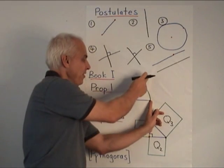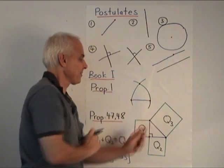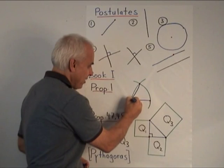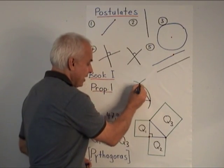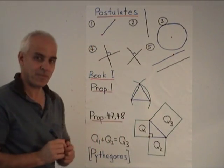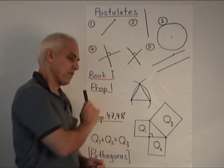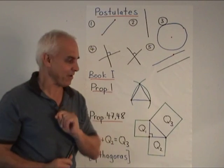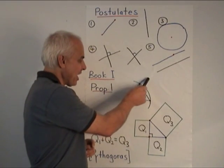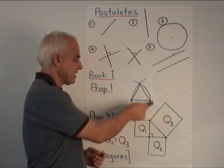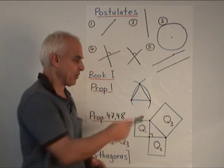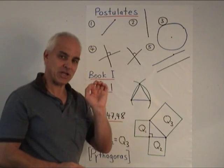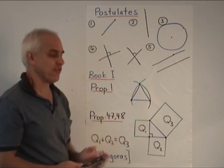And then another circle centered here through the other point. Then these two circles meeting here give us an equilateral triangle. And already with this first proposition, we have an example of a place where Euclid cheats a little bit, because he does not have a postulate that guarantees that these two circles necessarily meet. It's obvious from the picture that they do, but it's not actually logically a consequence of what he's set up already.